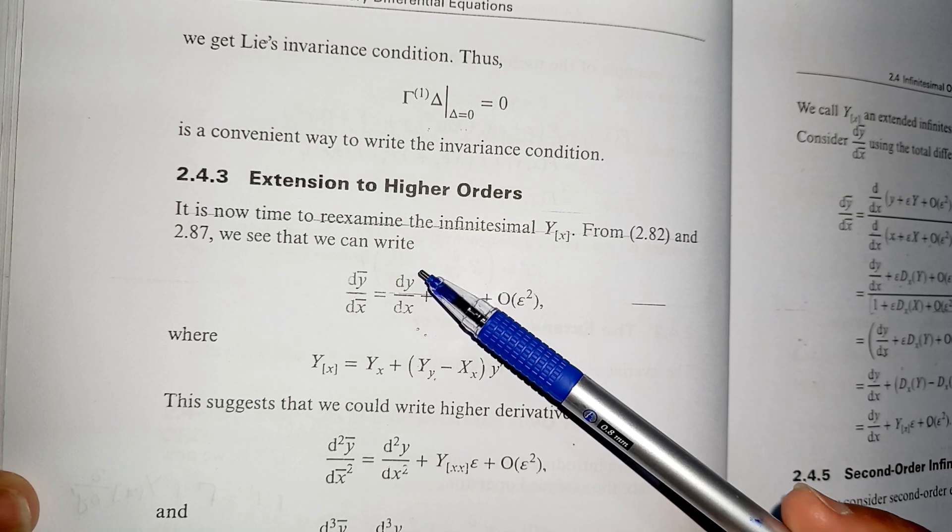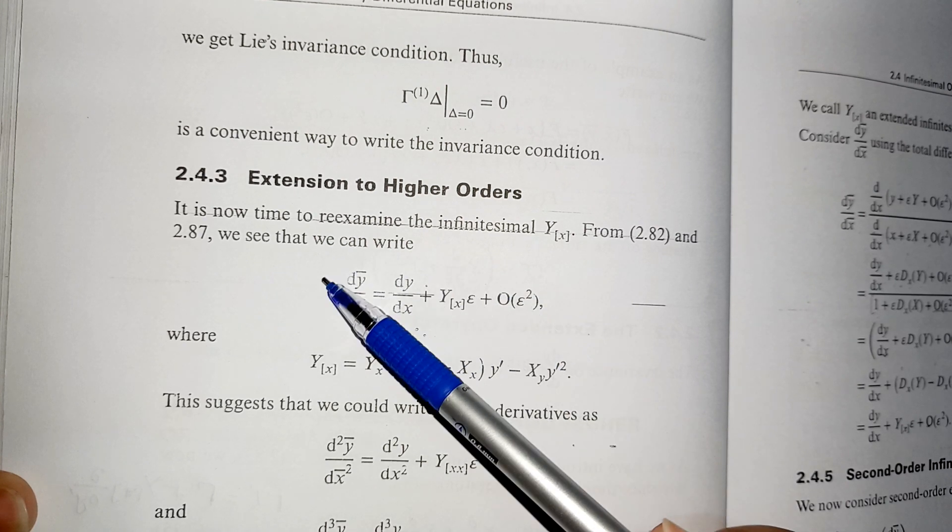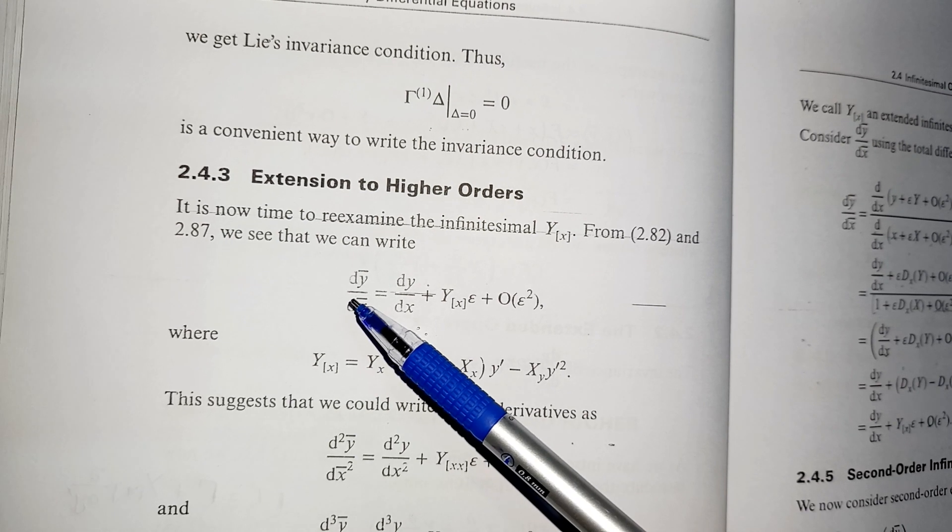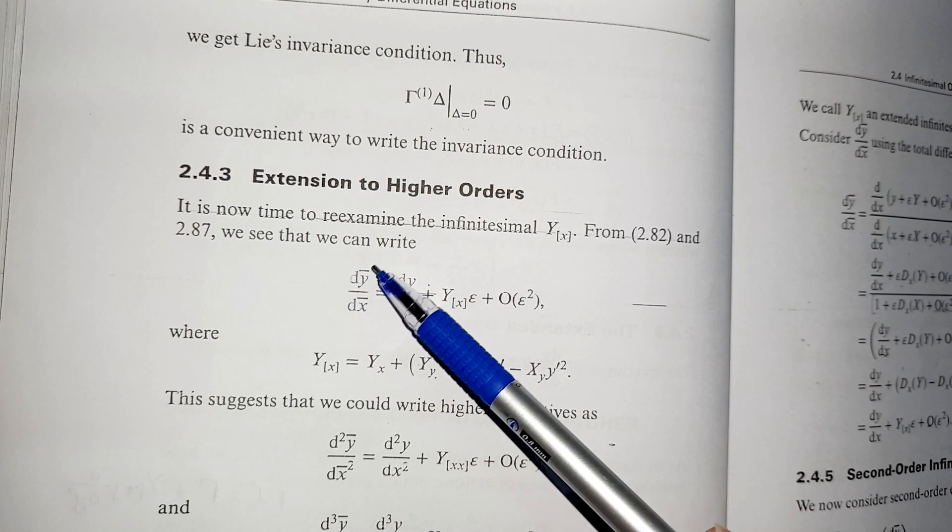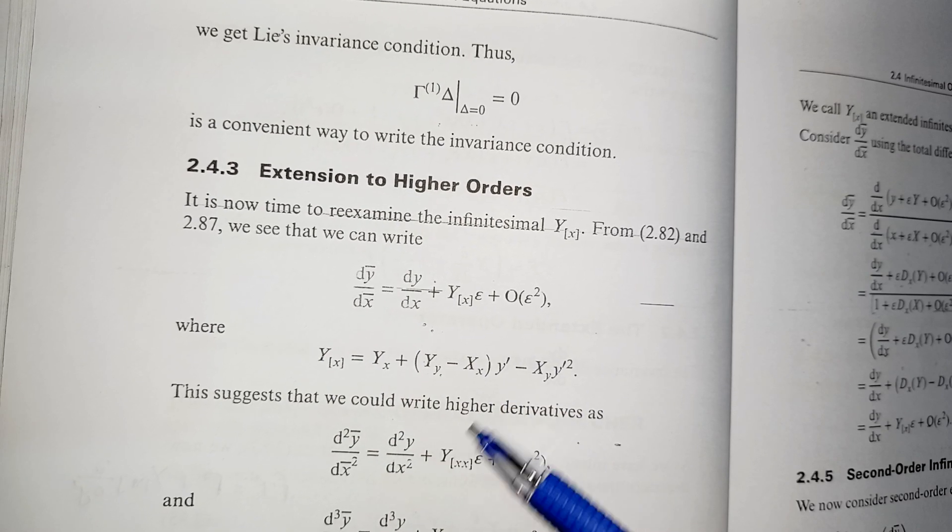Now students, as we have seen earlier that in the derivation of Lie invariance condition we have used the first derivative and if we want to check its Lie invariance then we can write it as dy bar by dx bar that is equal to this one where y of x is equal to this value.